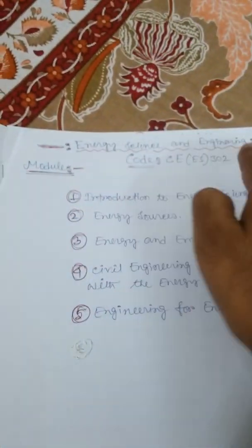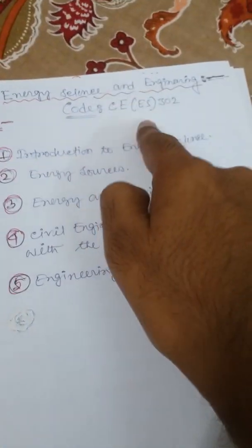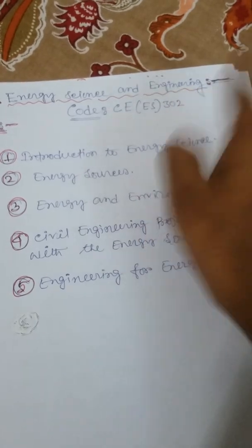Hi, I am Authanu Pandit, a faculty of Greater Kolkata Engineering and Management College, Department of Civil Engineering. I start Energy Science and Engineering subject. Subject name: Energy Science and Engineering, code CEES302.